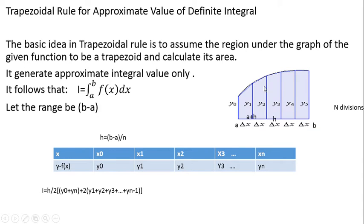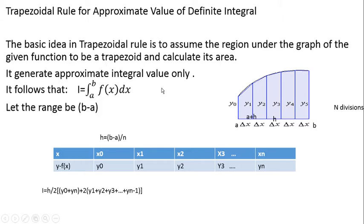Our task is to find the area of the trapezoid, which will approximately equal the integral value of the given function. This is the working principle of the trapezoidal rule. It generates an approximate integral value only — we cannot ensure it always generates the exact integral value; it generates only an approximate integral value in the usual case.